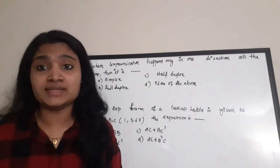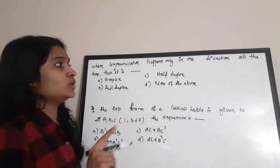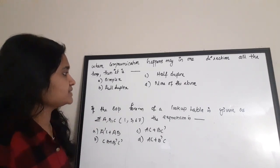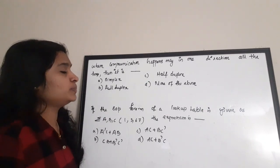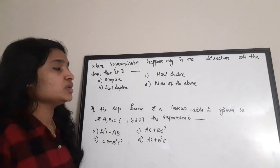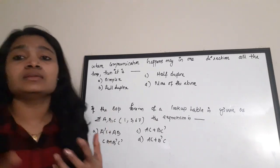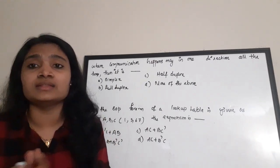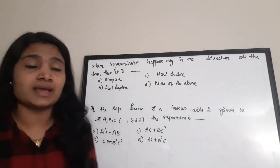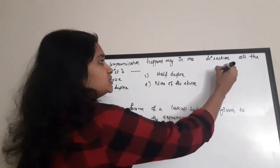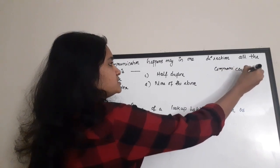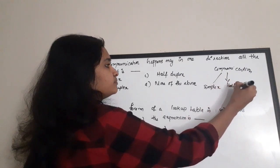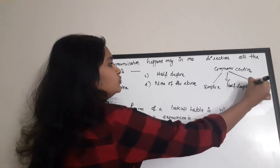Next question: when communication happens only in one direction all the time, it is called — a) Simplex, b) Full Duplex, c) Half Duplex, d) None of the above. In communication systems, based on the direction of sending and receiving messages, we classify communication into three types: Simplex, Half Duplex, and Full Duplex.